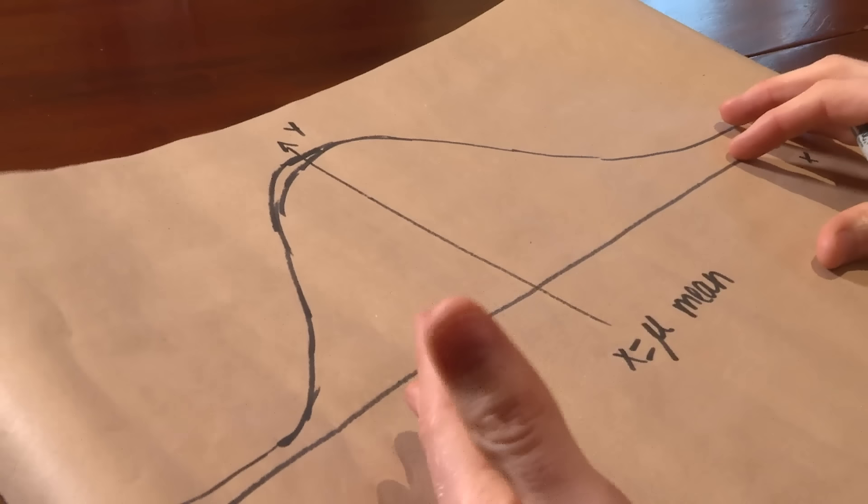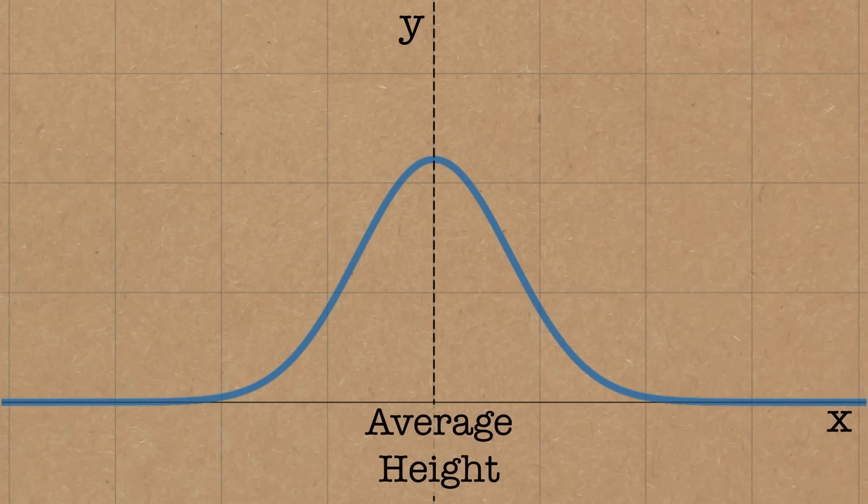A really common example would be like the height of people in the UK. There's an average height, and then you've got a few people who are really small and a few people who are really tall, but most of them are grouped around the mean. The power of the normal distribution is that it amazingly works for sets of data that you wouldn't even begin to think it would work for. There's something called the central limit theorem — I'm not going to talk about that today, but it's really cool homework.